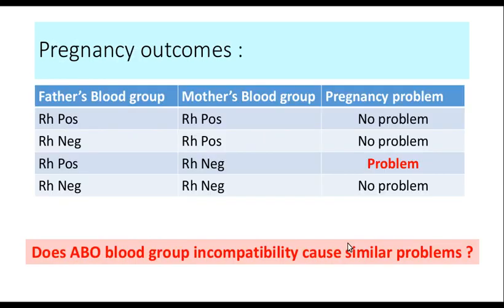Let's look at the various pregnancy outcomes in summary. If both father and mother are Rh positive — no problem. If the father is Rh negative and the mother is Rh positive — no problem. If both father and mother are Rh negative — no problem, as there are no Rh antigens. The only problem occurs when the father is Rh positive and the mother is Rh negative.